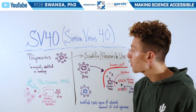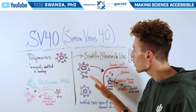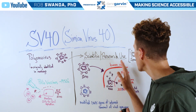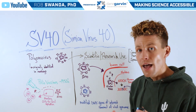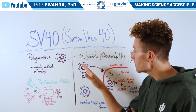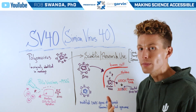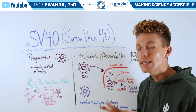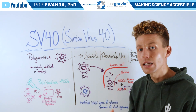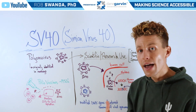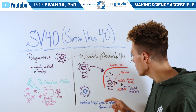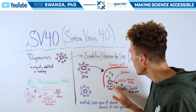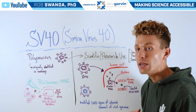Fast forward a few decades and now SV40 is being used in scientific and research fields, specifically for gene therapy. That's because SV40 is able to infect a human cell — its proteins are then dissociated and its DNA is encapsulated into an extra envelope. That extra envelope can cross our nucleus where our own DNA is housed, and then the SV40 DNA can be released.